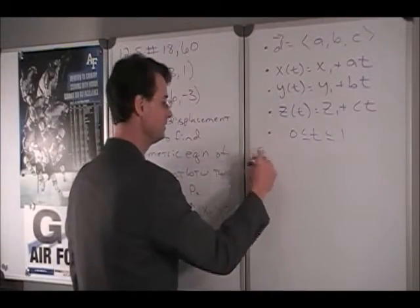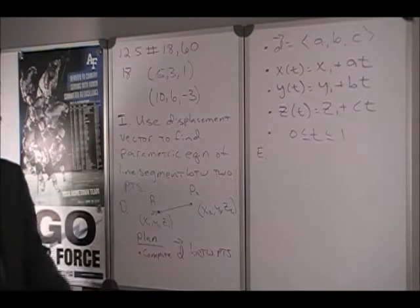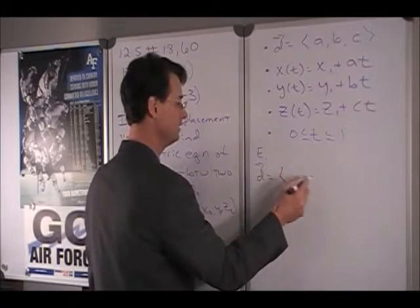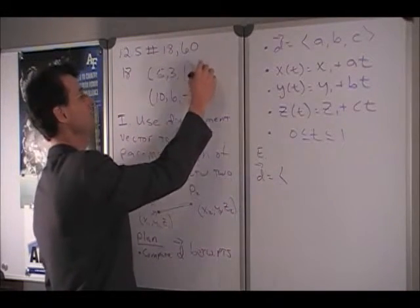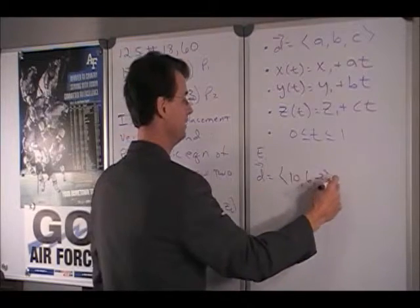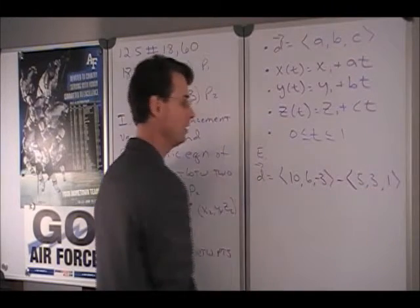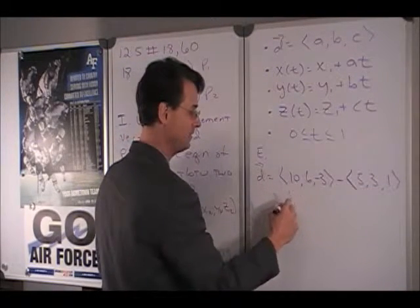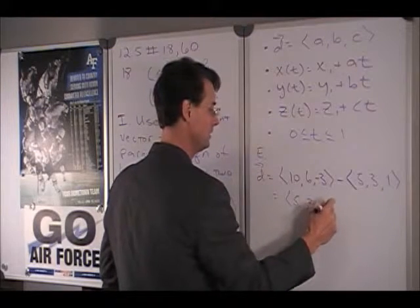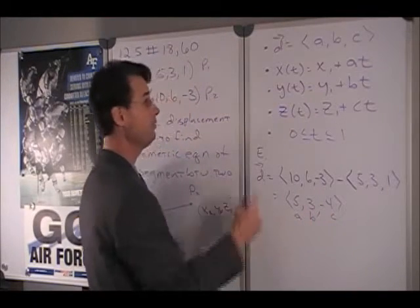So that's the development. Now, to evaluate, let's go ahead and compute this displacement vector. D is going to be the vector, and this is P1 and this is P2. So it's (10, 6, -3) minus (5, 3, 1). So 10 minus 5 is 5, 6 minus 3 is 3, and negative 3 minus 1 is negative 4. So now we can identify A, B, and C, and we can finish evaluating.